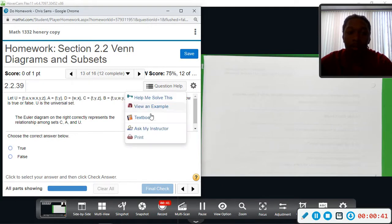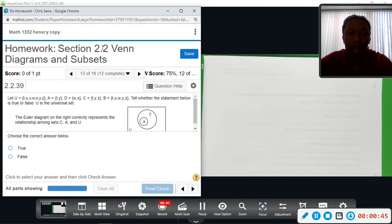You can kind of read about him in your text. You can pull it up from here by going to Question Help and Textbook. It'll take you to Section 2.2. You can read up a little bit on him. But it says we're going to use the Euler diagram on the right to see if it correctly represents the relationships among C, A, and U.